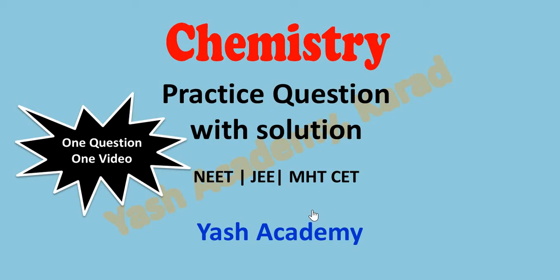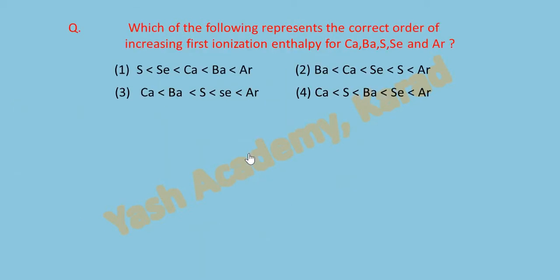Observe this video from start to end because the selected question covers the whole periodic table. Now see the question: which of the following represents the correct order of increasing first ionization enthalpy for calcium, barium, sulfur, selenium, and argon?